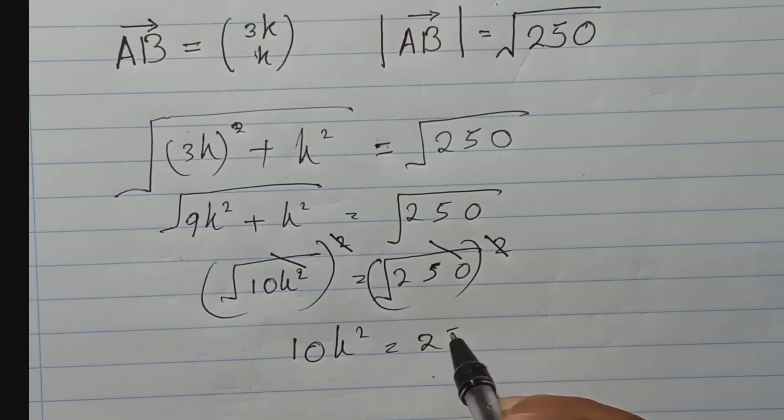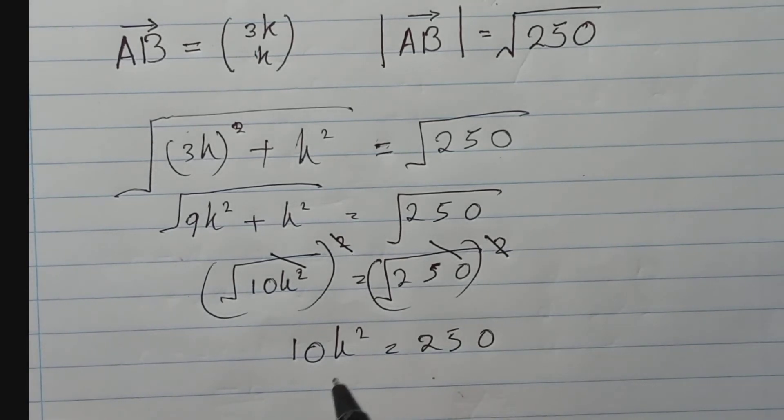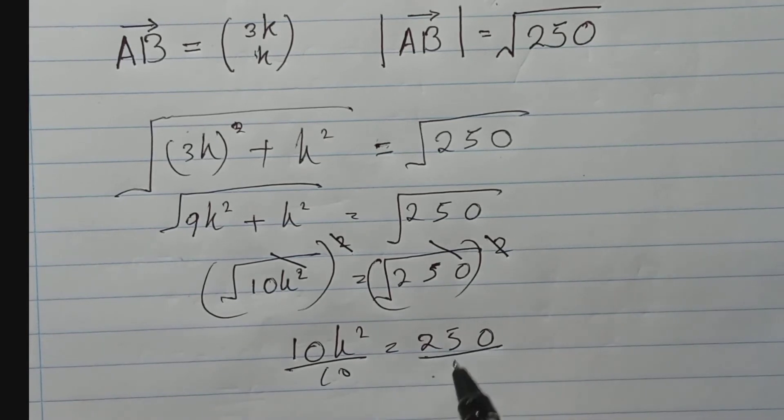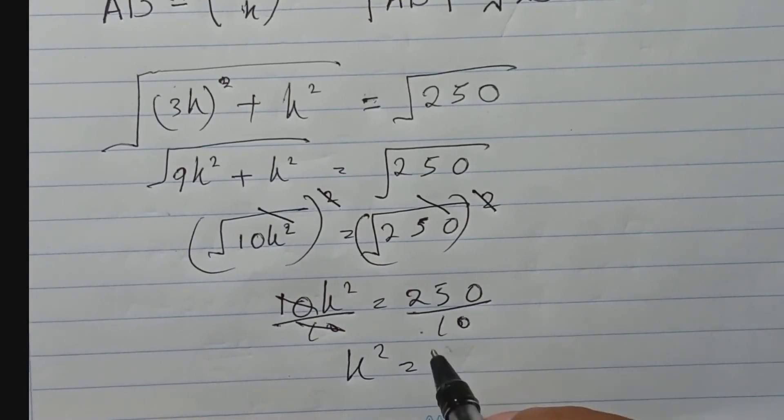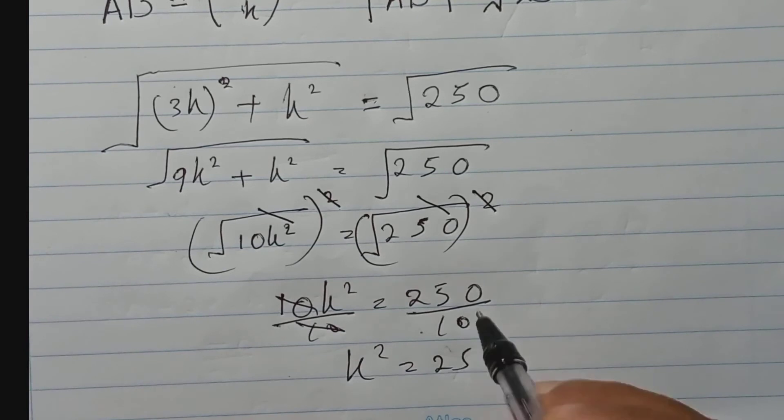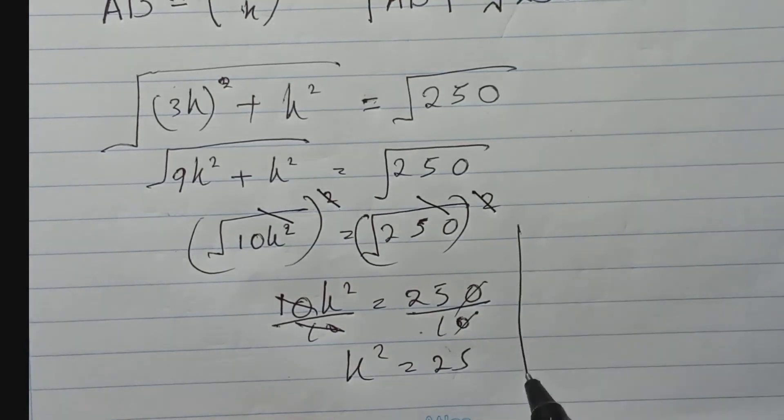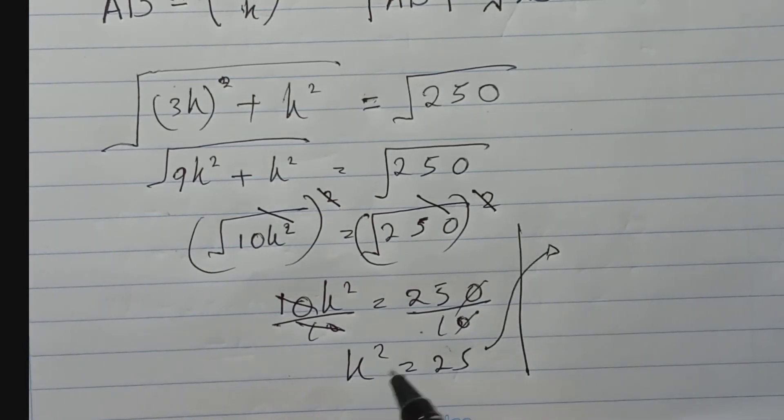Now both sides divide by 10, then you will have k square. K square equal 25, this 0 this 0 cut. Now k square equal 25.